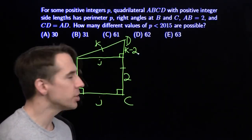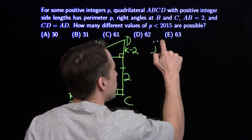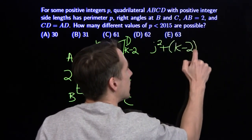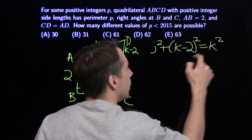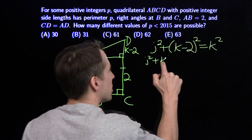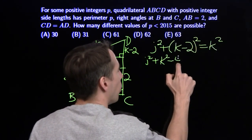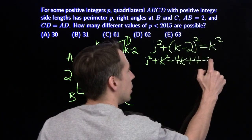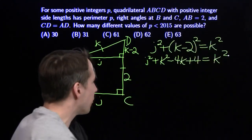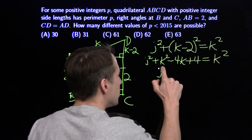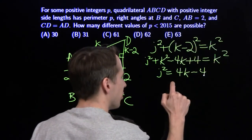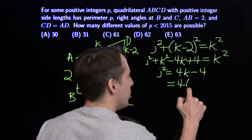It's going to give us that equation we need. We use the Pythagorean Theorem. We have J squared plus K minus 2 squared equals K squared. Go ahead and expand this. We'll have J squared plus K squared minus 4K plus 4 equals K squared. And conveniently, those K squareds cancel out. We can solve for J squared. J squared equals 4K minus 4. We can also think of that as 4 times K minus 1.